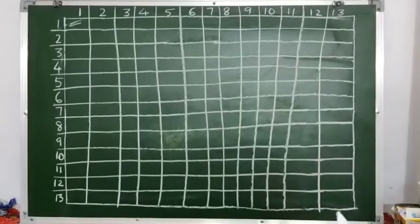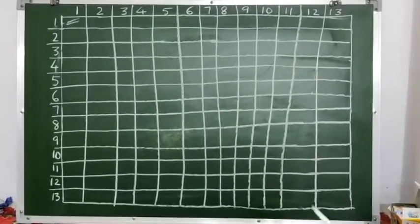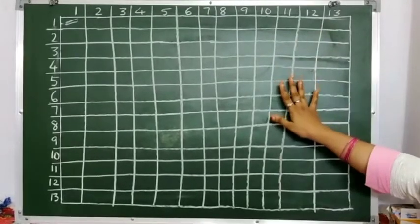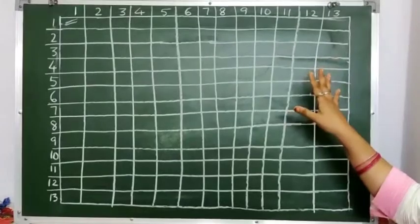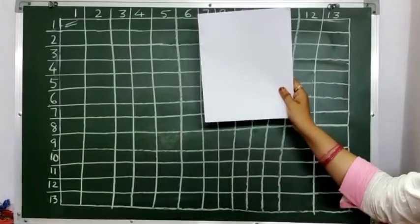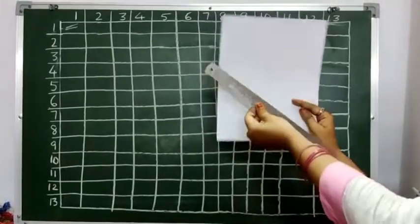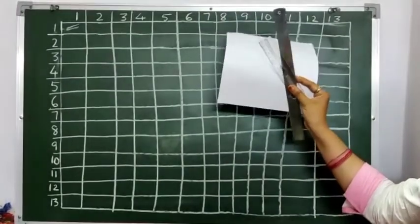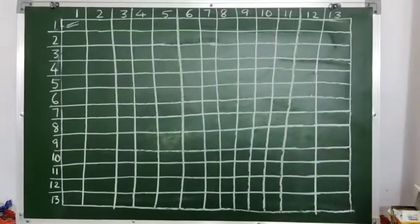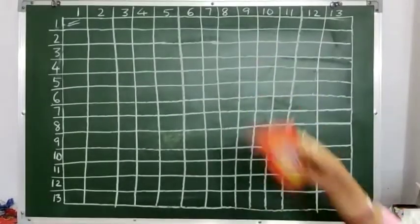Hello children, today we are going to do an activity on factors and multiples. For that activity you need to make this grid, and what you require to make that grid is file paper or A4 sheet whichever you have at home, then you require rulers, whichever the small or the big one, then you need pencils and you need some crayons too.